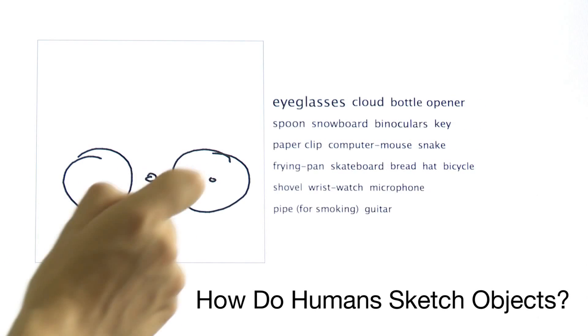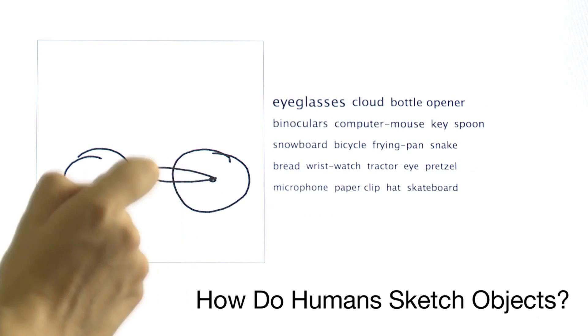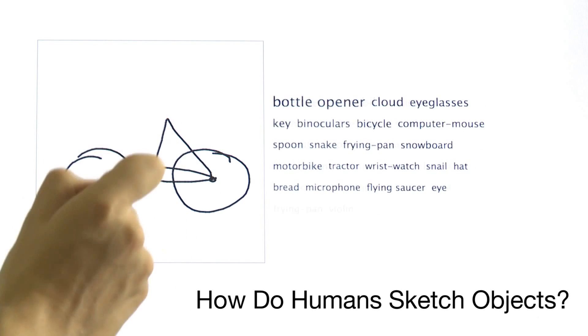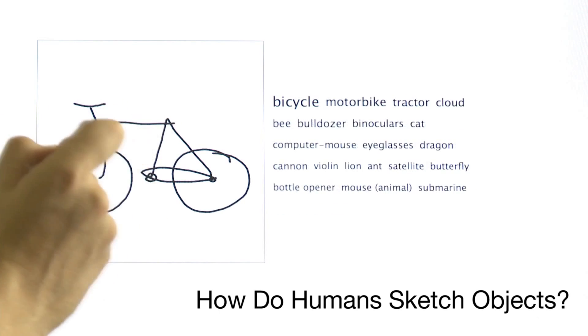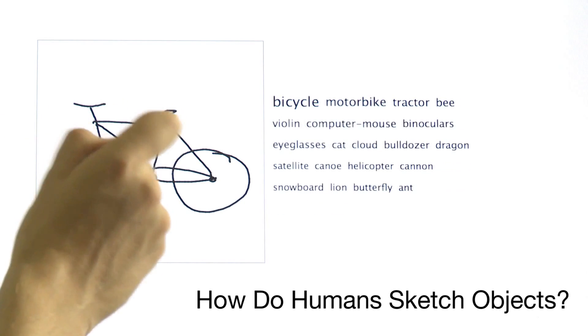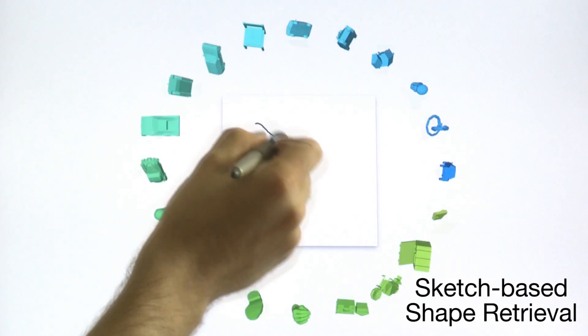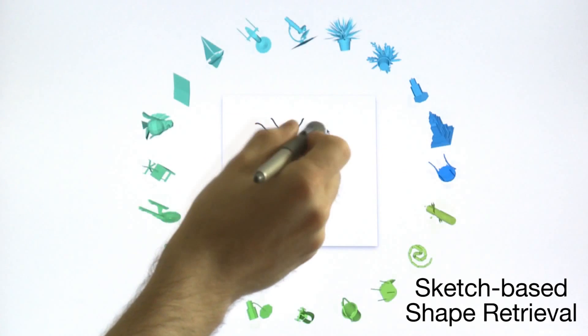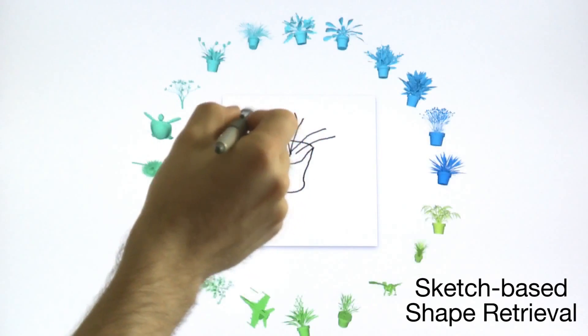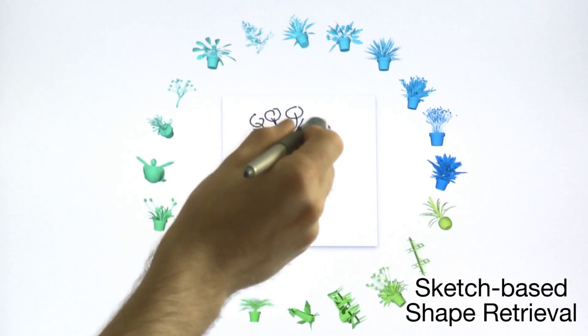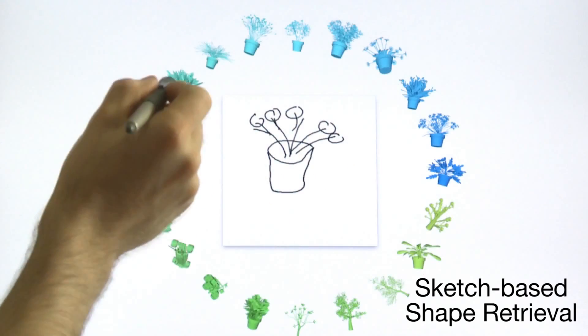This project analyzes how well both people and computers are able to discern rough sketches of everyday objects like this bike, and this sketch-based approach for exploring shape databases makes it easy to find potted plants and other shapes.